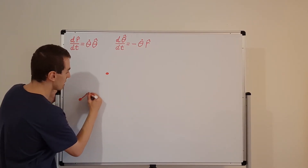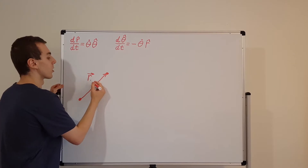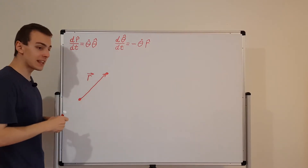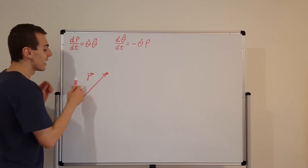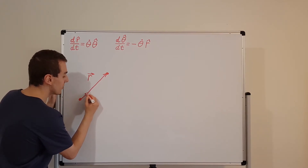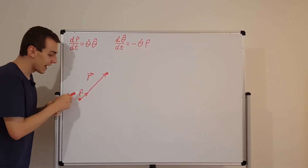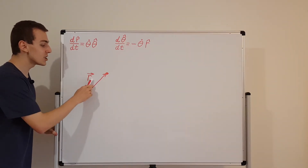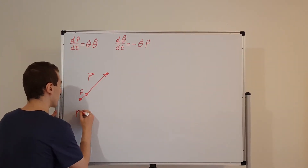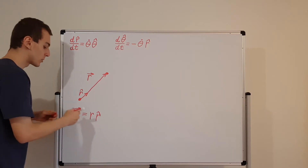We draw a vector from the origin to the particle and call it r⃗, the position vector. We need to distinguish between r⃗ (the position vector) and r̂ (the unit vector): both point in the same direction, but r̂ has magnitude 1, while r⃗ has magnitude r, the distance from the origin. So we write r⃗ = r·r̂, where r is a scalar. That's how we represent position in polar coordinates.